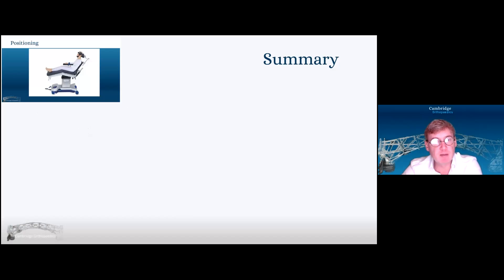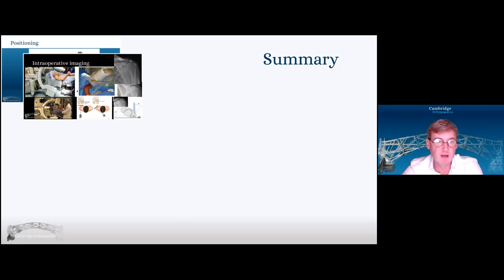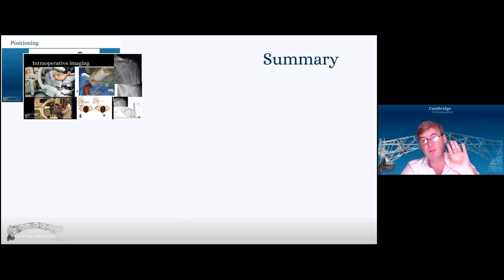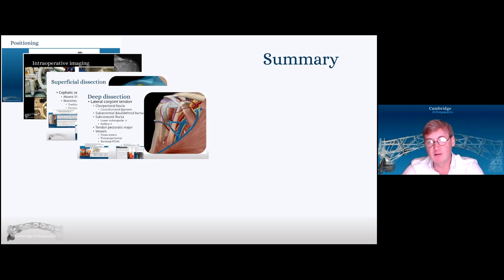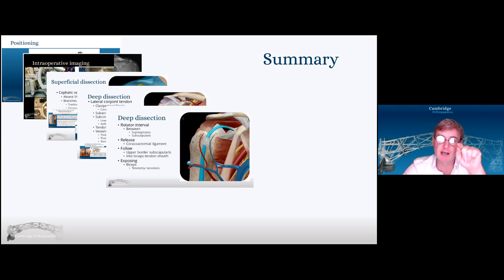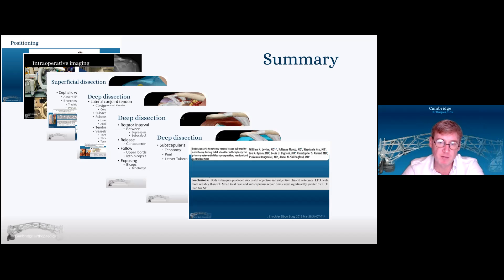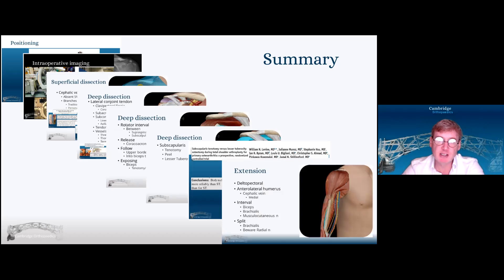In summary: positioning is often beach chair position — pay a lot of attention to the head and make sure the patient is sitting comfortably before you start. For intraoperative imaging, I like the image intensifier to come from the opposite side, perpendicular to the humerus, then corrected for the version of the scapula on the chest wall by pulling the image intensifier back 30 degrees. I make my skin incision differently depending on what I'm hoping to do, generally laterally so that I know my cephalic vein is medial. I keep the cephalic vein on pectoralis major, find the rotator interval, come around it, and lift subscapularis — often with the subscapularis peel. My extension of the delta-pectoral approach is into the anterolateral humerus. Thank you for your attention.